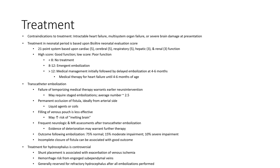Treatment in the early period is based upon the Bicêtre neonatal evaluation, a 21-point system based upon cardiac function, cerebral function, respiratory function, hepatic function, and renal function. A high score indicates good function and a low score indicates poor function. Score less than 8: no treatment. Score 8 to 12: emergency embolization. Score more than 12: medical management initially, followed by delayed embolization, ideally waiting until 4 to 6 months of age.